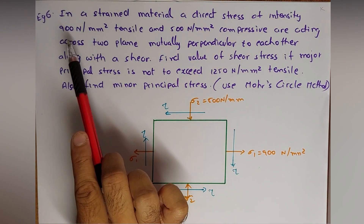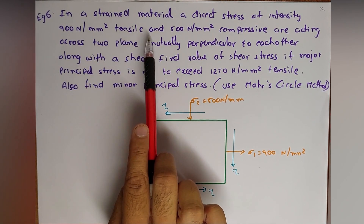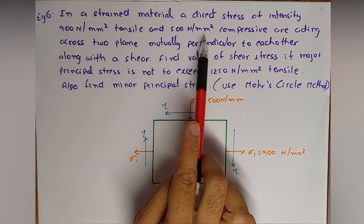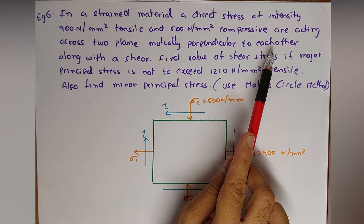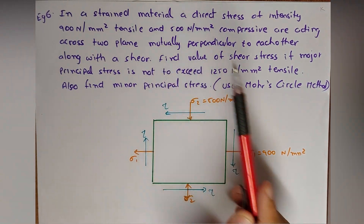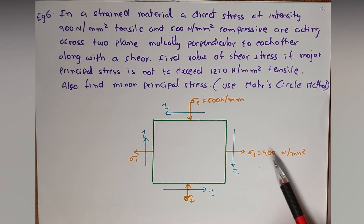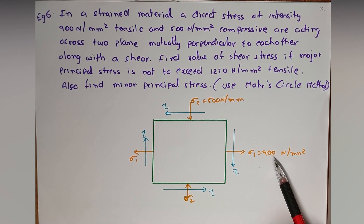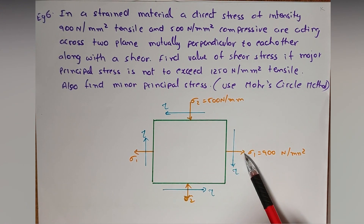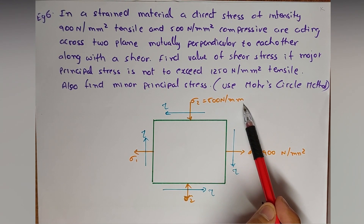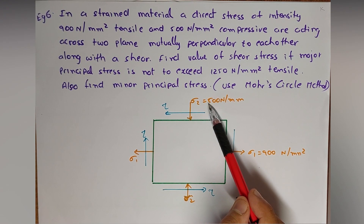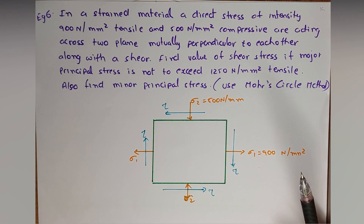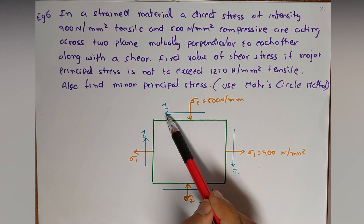Let me read the question. In a strained material, a direct stress of intensity 900 Newton per mm² tensile and 500 Newton per mm² compressive are acting across two planes mutually perpendicular to each other, along with a shear stress. Sigma 1 is 900 N/mm² tensile and Sigma 2 is 500 N/mm² compressive. Since the natures are different, we'll take Sigma 2 as negative in our calculations.